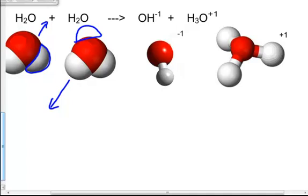What you would have left over is a water without hydrogen, a proton, and then you'd have a water with an extra proton. What do we call those? Well, of course, this is called hydroxide, and this is called hydronium.